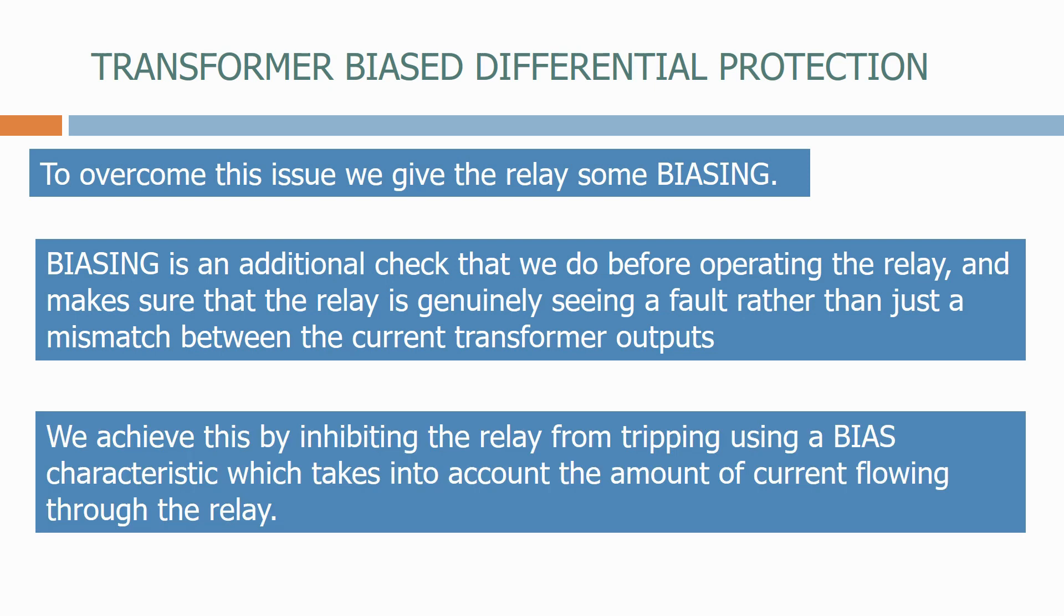We achieve this by inhibiting the relay from tripping using a bias characteristic, which takes into account the amount of current flowing through the relay.